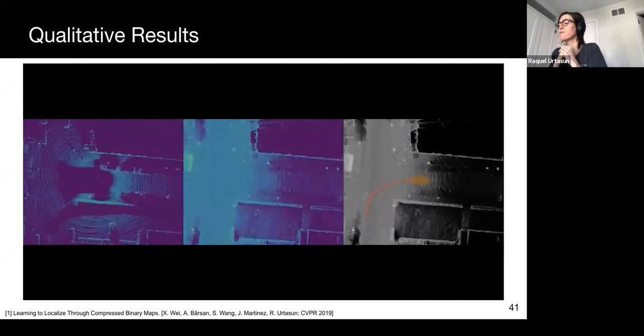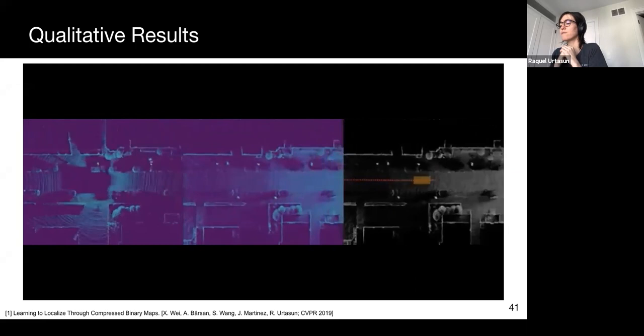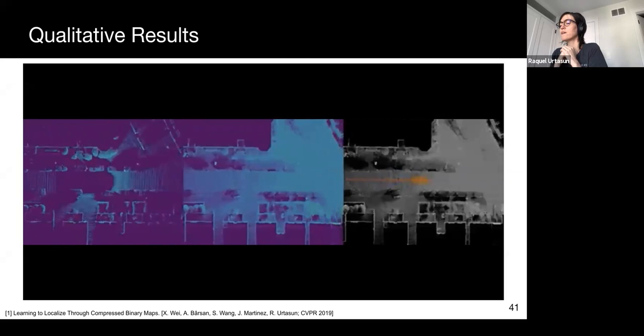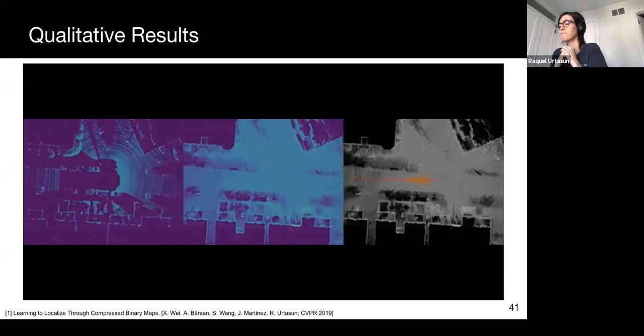Here we show some qualitative results. On the left is our online lidar. In the middle is the map and on the right is the localization result. Vehicle pose predicted by our method is in red and ground truth is in green. Note that in these cases, we can see that our pose and ground truth pose are almost perfectly aligned.